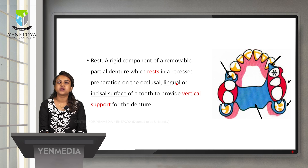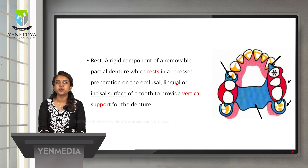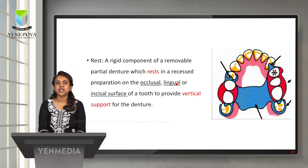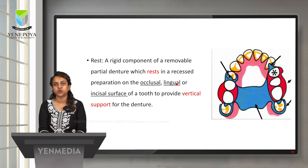Just as rest is important in our regular life, in the fabrication of removable partial dentures, though it is the smallest component, it plays a very important role. The rest is a rigid component of removable partial denture which rests in a recess preparation on the occlusal, lingual, or incisal surface of the tooth to provide vertical support for the denture, preventing the tissue-ward movement of the denture downwards.